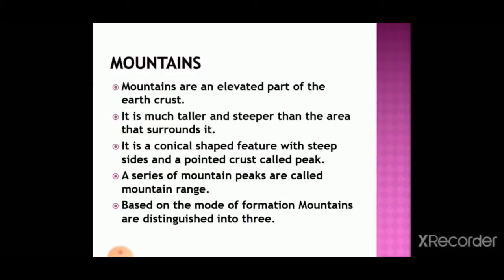What are mountains? Mountains are an elevated part of the earth's crust — much taller and steeper than the surrounding area. They are usually in a conical shape with steep sides and a pointed crest called peaks. A series of mountains is called mountain ranges, and a series of mountain peaks is also called mountain ranges. Based on the mode of formation, mountains are of three types: fold mountains, block mountains, and volcanic mountains.